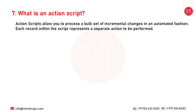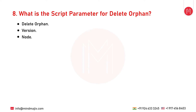The next question is: what is an action script? Action scripts allow you to process a bulk set of incremental changes in an automated fashion. Each record within the script represents a separate action to be performed and is processed individually. Actions of different types can be grouped together in the same script. Action scripts are particularly useful when you need to perform the same set of actions for multiple versions, hierarchies, or nodes. You can leave the action script page while a script is running and return later to view the results.